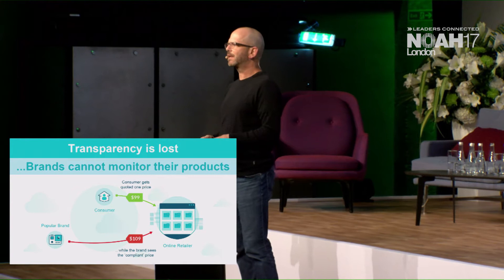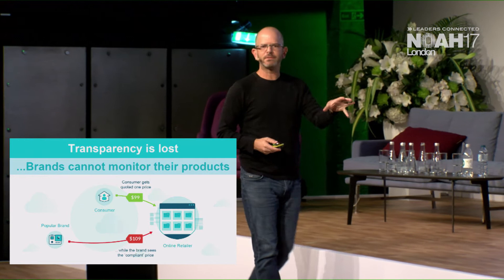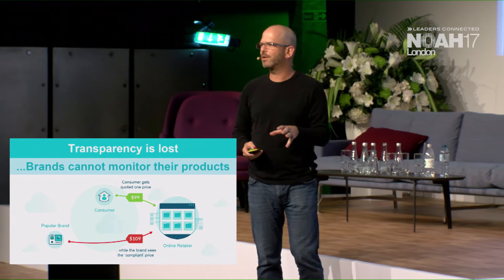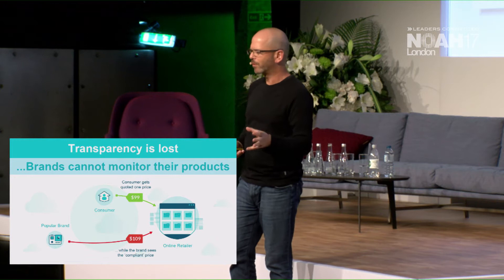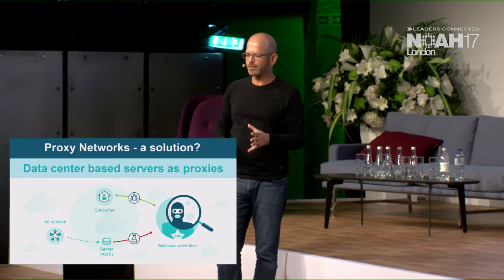Let's take one last case. Say you're a big brand like GoPro and you want to make sure that all ten thousand stores online are selling your GoPro product at $399. But when they see that it's you checking, they give you the right price, and when it's a consumer, they show them the wrong price. There's this new opacity on the internet because of the dynamic nature of the web.